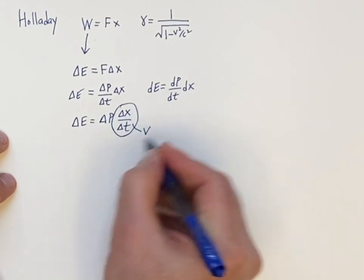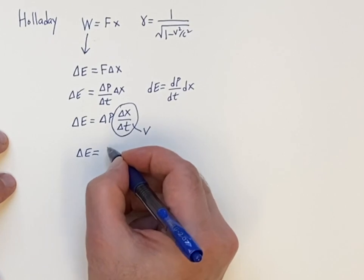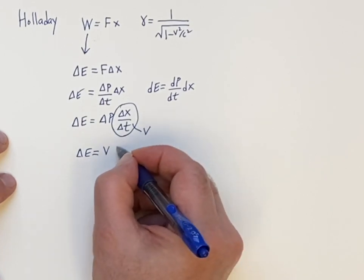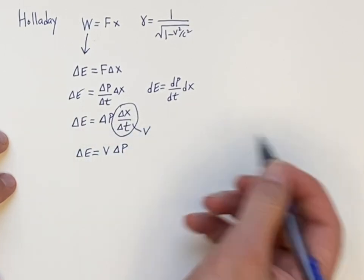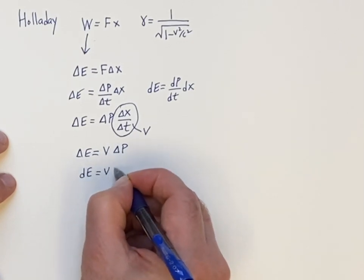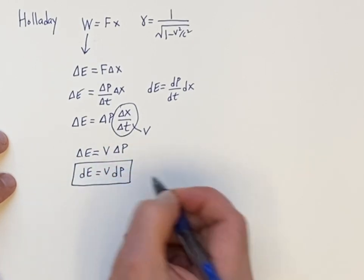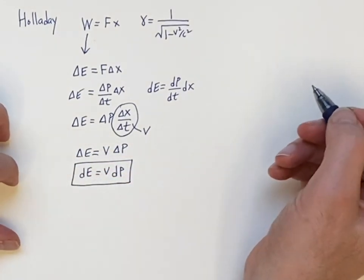This is going to be your velocity, and we're going to have delta E is the velocity times delta P. And now if I write that in infinitesimal form, dE is V dP. And that's a very important equation that we'll be needing shortly.